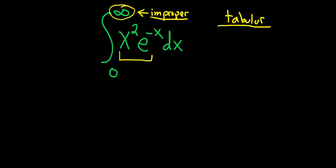So tabular integration works when one of the factors after repeated differentiation is eventually 0. In this case, that factor is x². So you write down the x² and then you just start differentiating. So 2x is the derivative and then 2 and then 0. So again, one of the factors has to be eventually 0.